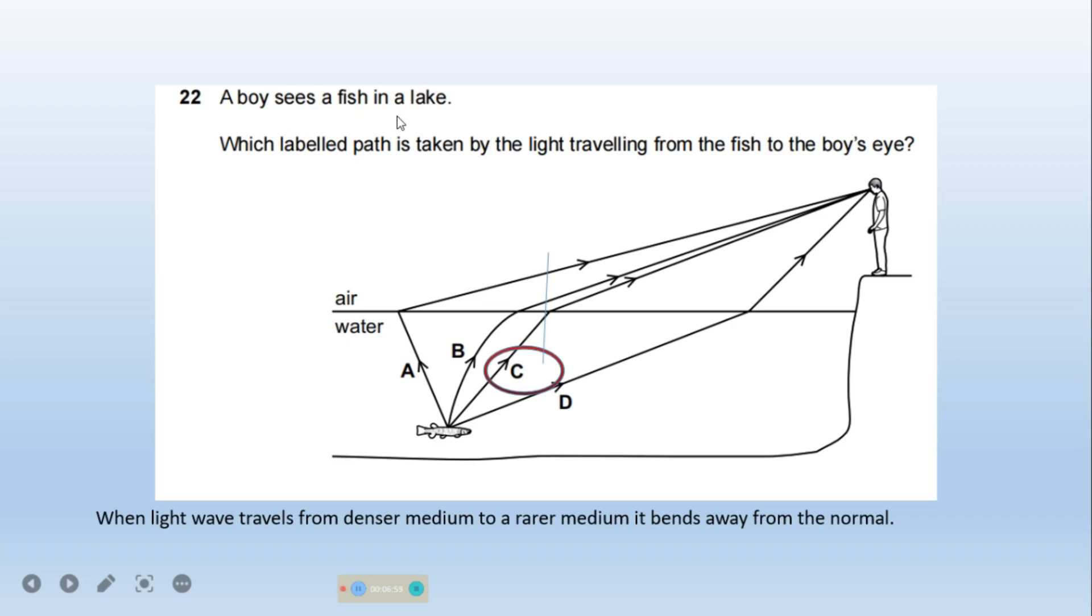A boy sees a fish in a lake. Which labelled path is taken by the light travelling from the fish to the boy's eyes? Here, you should consider important fact that when light travels from one denser medium to rarer medium, as water is dense, it bends away from the normal. Here we can see that if we draw a normal here, the light bends toward the normal in option D.